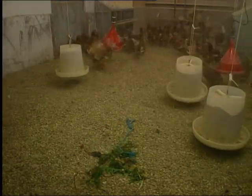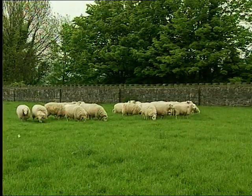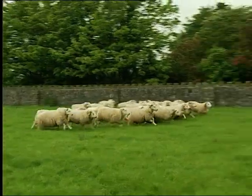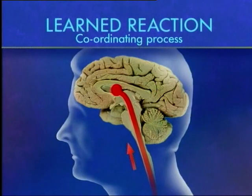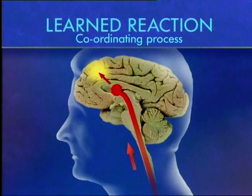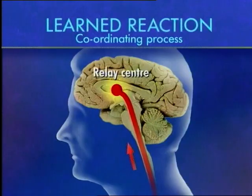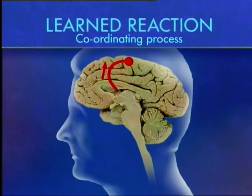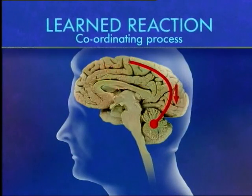A reflex response to a stimulus, like a sudden noise, is normally the same in all members of a species and similar in most species. But most learned responses are the result of signals being processed in the brain, where they can take any one of literally billions of different routes. We start at a relay center, which sends a signal to a thinking, decision-making area of the brain. A decision is made.